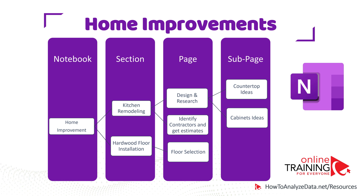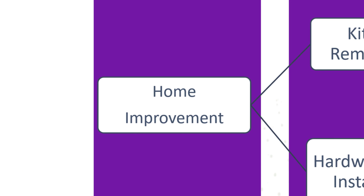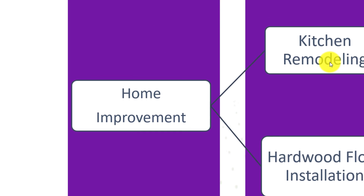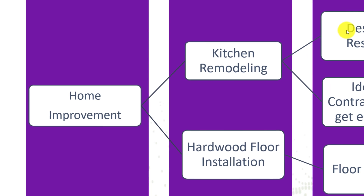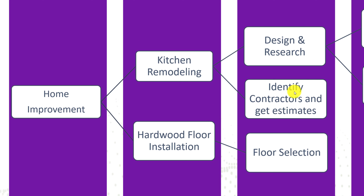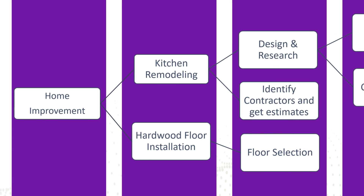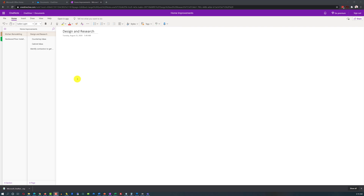Let's look at some ideas for organizing your data. Here is the structure of a home improvement notebook in OneNote. The notebook is named home improvements and has two sections: kitchen remodeling and hardwood floor installation. Kitchen remodeling has two pages — design and research, and identify contractors and get estimates. In design and research, we have two sub-pages: countertop ideas and cabinet ideas.